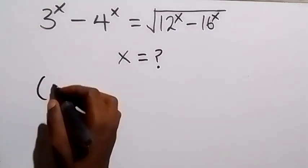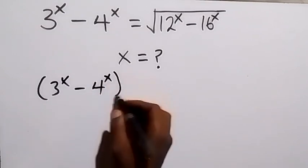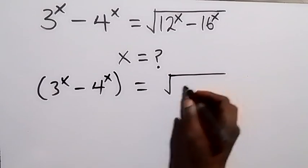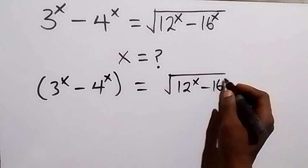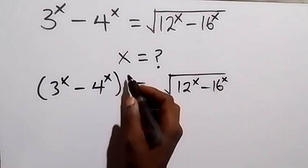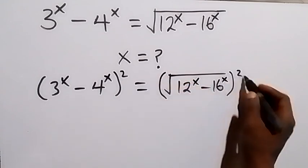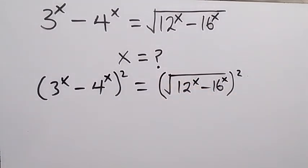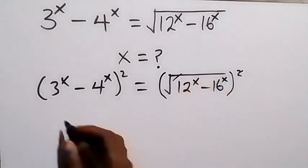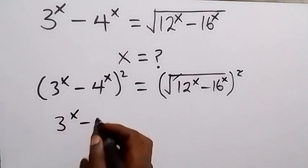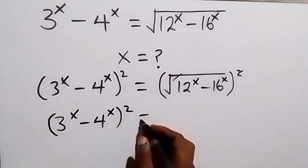From here we have 3^x minus 4^x equals the square root of 12^x minus 16^x. Let's square both sides — squaring the right side cancels the square root, and the left side becomes (3^x minus 4^x) squared.